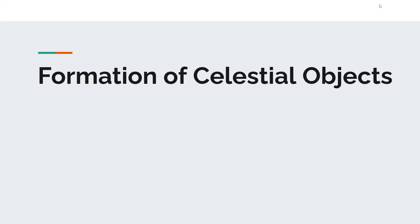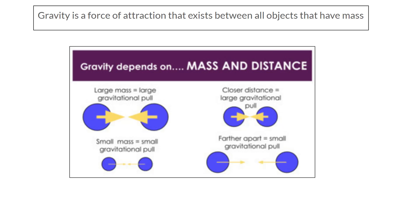Hey guys, so today we're going to talk about how some of the celestial objects in our universe formed. So let's get started. The first thing to understand about anything that's going on in space, especially how things form, is gravity.